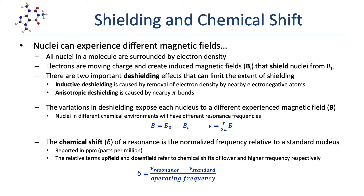Each resonance in an NMR experiment is reported in terms of its chemical shift, represented as a lowercase delta. Chemical shift is a normalized frequency relative to the resonance frequency of a standard nucleus. The units for chemical shift are parts per million, or ppm. The terms upfield and downfield are used to refer to the relative positions of chemical shifts. Upfield resonances are lower in frequency, and downfield resonances are higher in frequency — and note, that may seem backwards, but that's the convention.